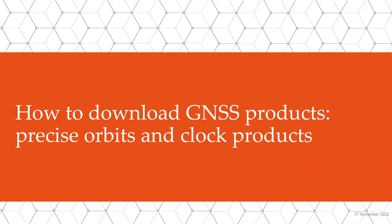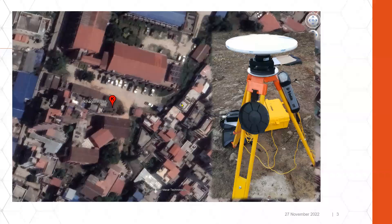In this video I will show the demonstration on how to download precise orbits and clock products of a GNSS system. We ran a GNSS survey here — we operated a Trimble GNSS receiver at this site and collected data for a few hours, then downloaded that data from the GNSS receiver.